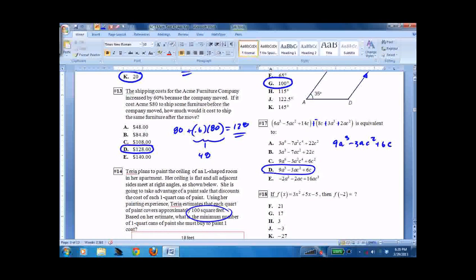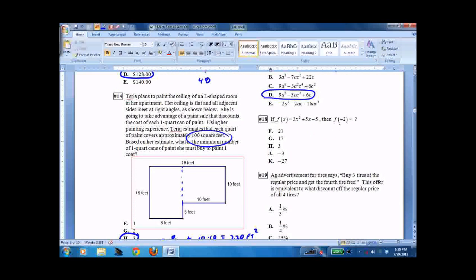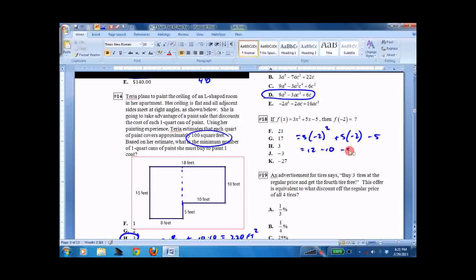18. f of x is this. What's f of negative 2? Well, this is things that bother students. It's not that hard. You're just plugging it in. Put the negative 2 in wherever an x is. So you get 12 minus 10 minus 5. 2 minus 5 is negative 3.